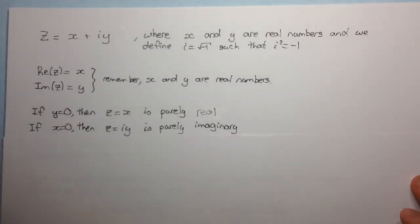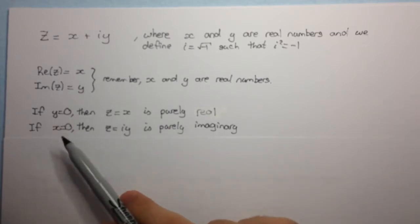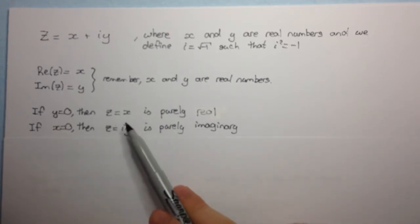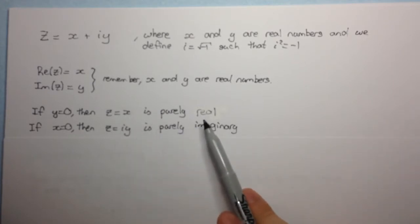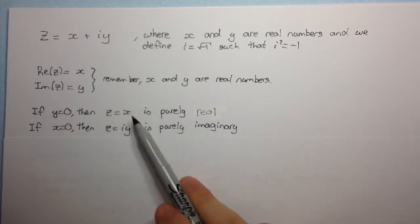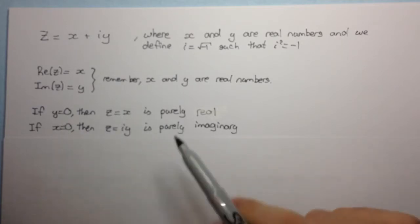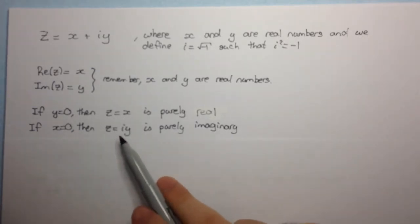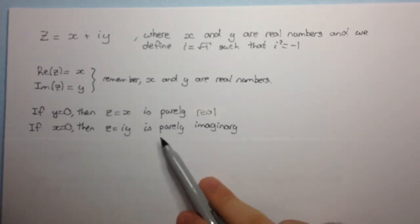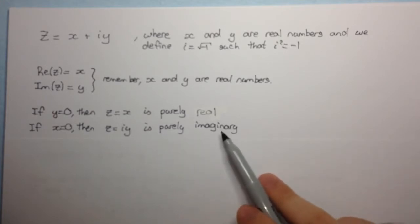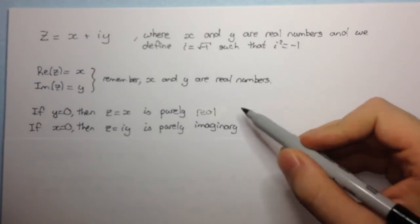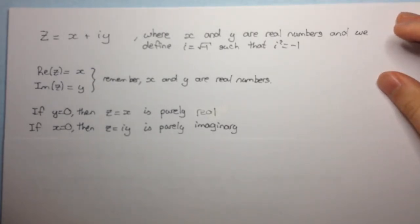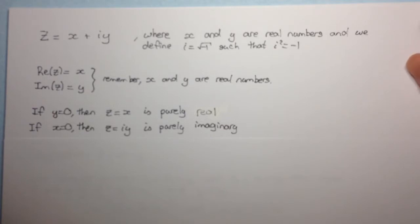If we set y equal to zero, then the complex number z reduces to z equals to x, and this is what's known as a purely real number — it has no imaginary part. Now if we set x equal to zero, then z is equal to iy, and this has no real part, so we call it purely imaginary. This might come up in questions where they ask you, for example, if a complex number is purely imaginary, find the roots of a polynomial. We'll see examples of that in later videos.